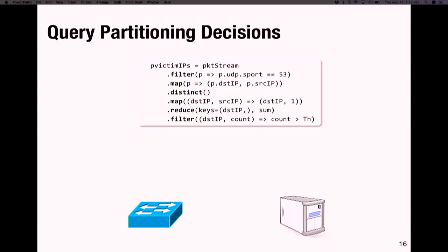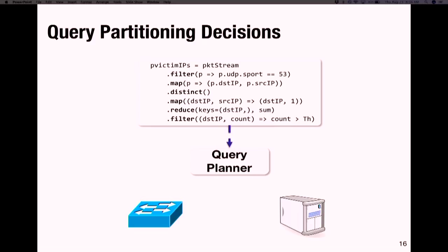We understand how a query can be compiled as match-action tables over a switch, or executed over a stream processor using CPUs. But the resources available on a switch are limited. The system requires a query planner that decides which portion of the query should be executed on the switch and which portion on the CPU. After applying switch processing, remaining tuples are sent to the CPU for further processing, and there are many decisions the query planner can make.